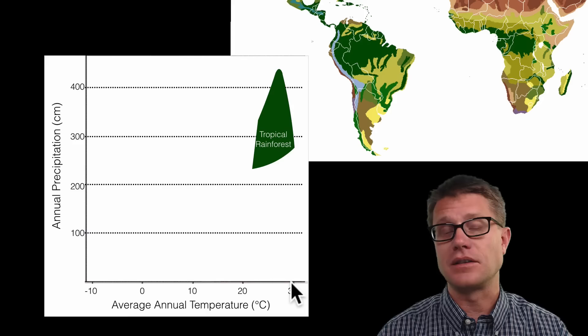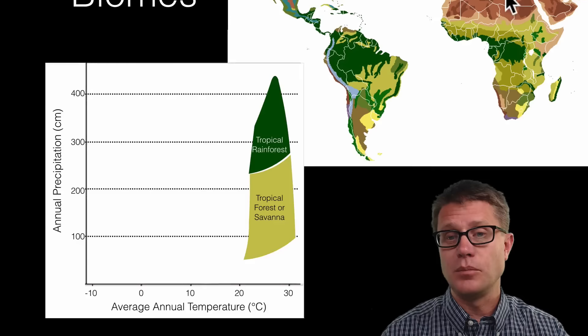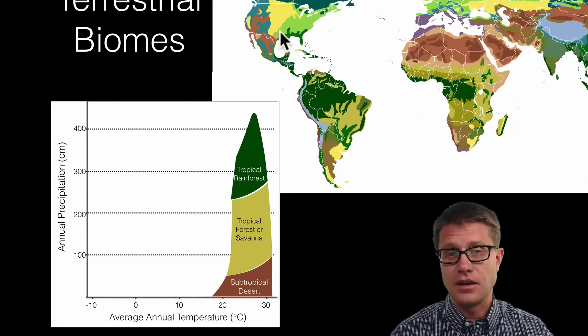If we go in Africa right here and then move to an area where it is still hot but we have less precipitation, that is going to be a tropical forest or savanna. If we keep moving up so we have even less precipitation, then we are going to get into a subtropical desert. You can see those at this latitude and at this latitude right here.